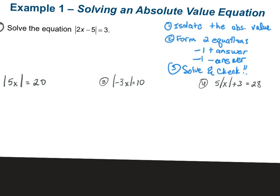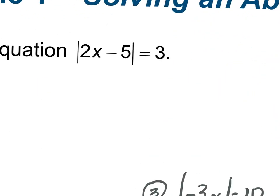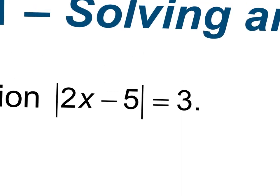If I look at this first example, it says the absolute value of 2x minus 5 equals 3. The reason we set two different equations is because the absolute value of 3 is 3, and the absolute value of negative 3 is also 3.